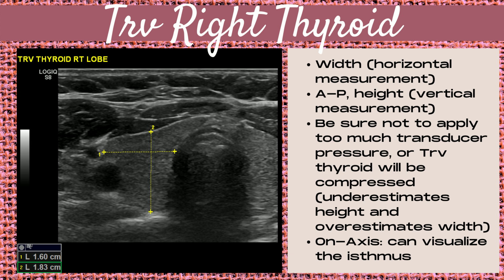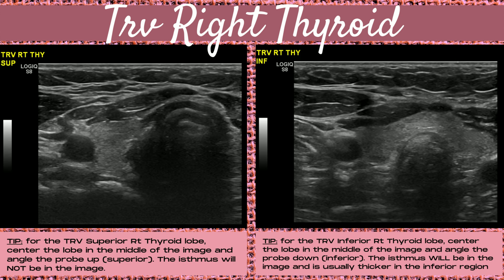Ensure you're on axis and can visualize the isthmus, and also ensure that your height measurement does not include the isthmus. For the transverse right thyroid superior pole, center the lobe in the image and angle the probe upwards — the isthmus will generally not be visible. If you do see the isthmus, you generally haven't angled up high enough. For the transverse inferior right thyroid lobe, center the lobe and angle the probe downwards. The isthmus will be in the image and is usually thicker in the inferior region than in the middle segment.